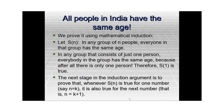Here is another interesting fallacy in which we prove that all people in India have the same age, using the principle of mathematical induction. Let S(N) be the statement: in any group of N people, everyone in that group has the same age. If we can show S(N) is true for every N, we are done. For N = 1, if there is a group consisting of just a single person, the statement is trivially true because there is no other person in the group. So S(1) is trivially true.